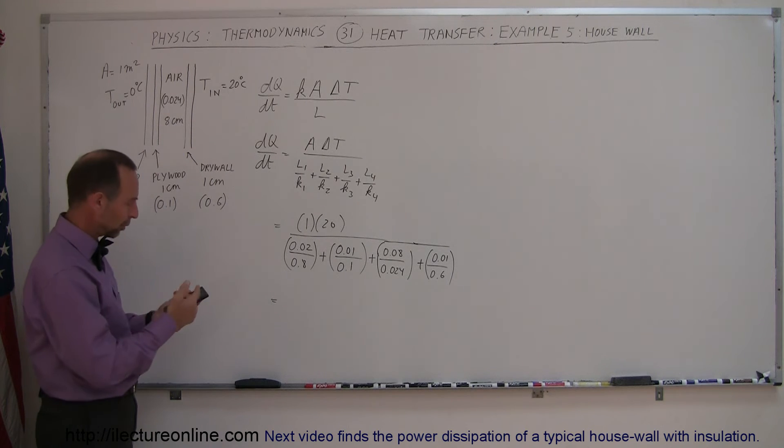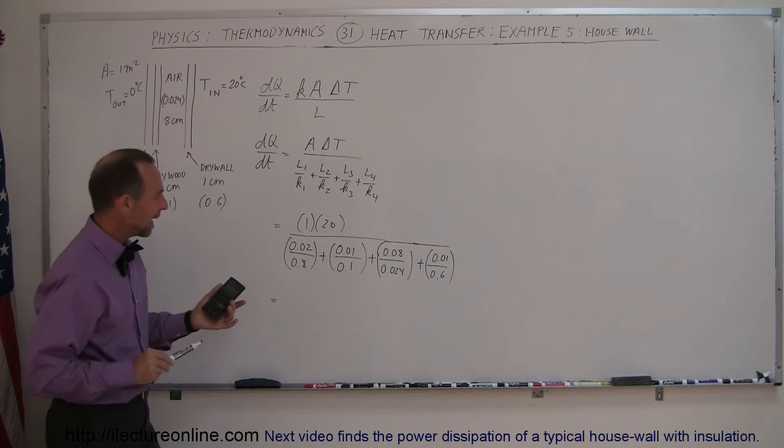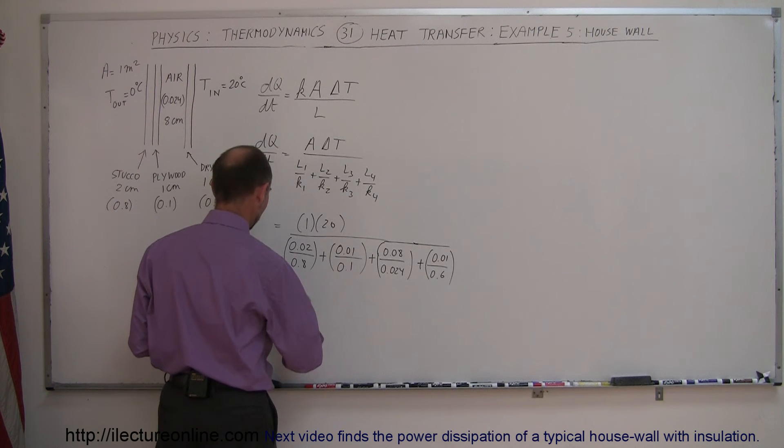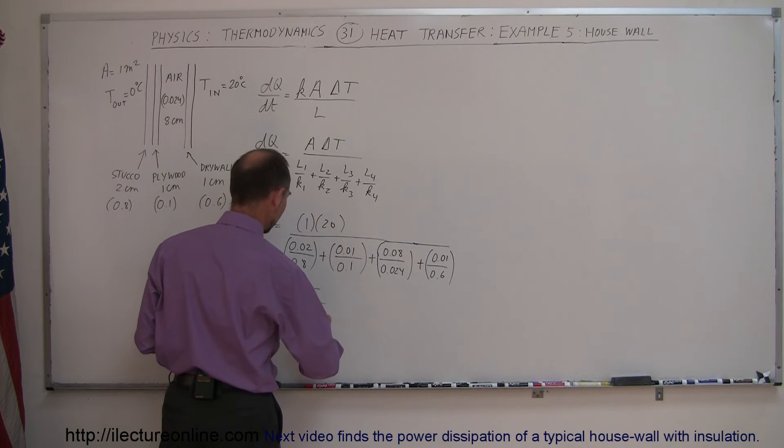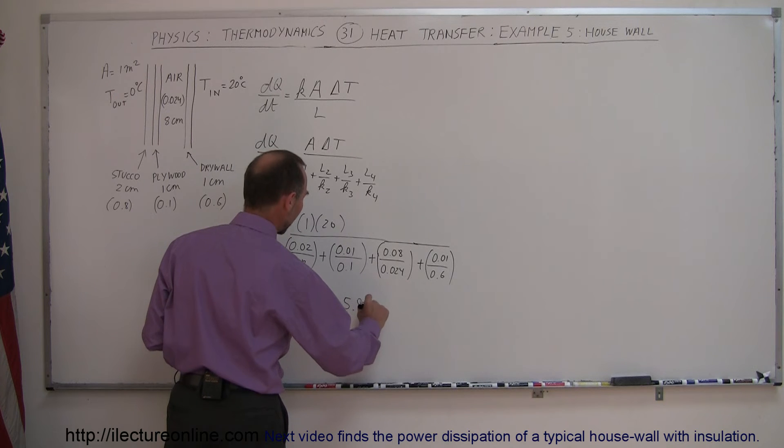That's the denominator, now we're going to go ahead and take the inverse of that to bring it to the numerator, times 20, and we get 5.8 watts, or 5.8 joules per second, which is equal to 5.8 watts.